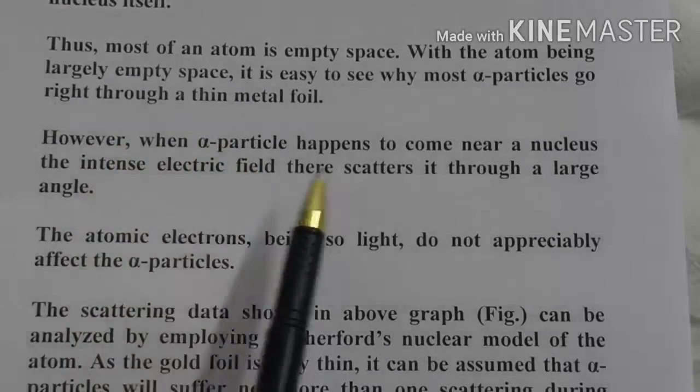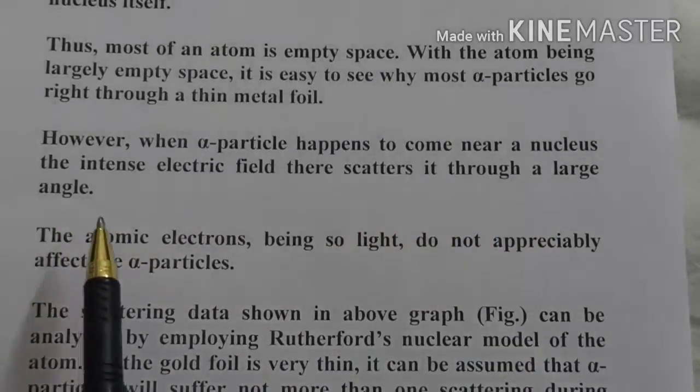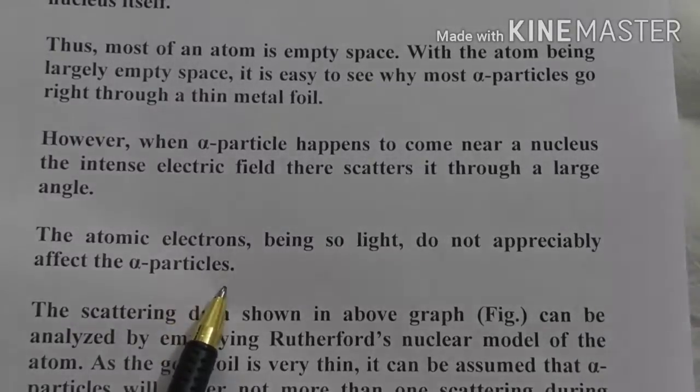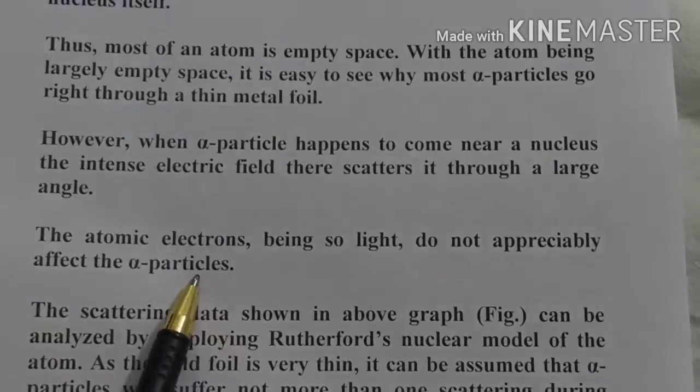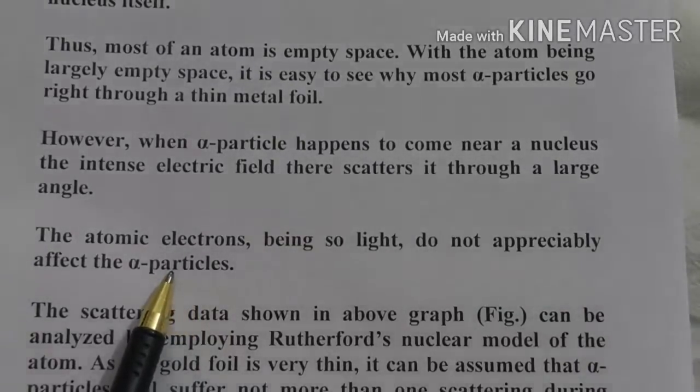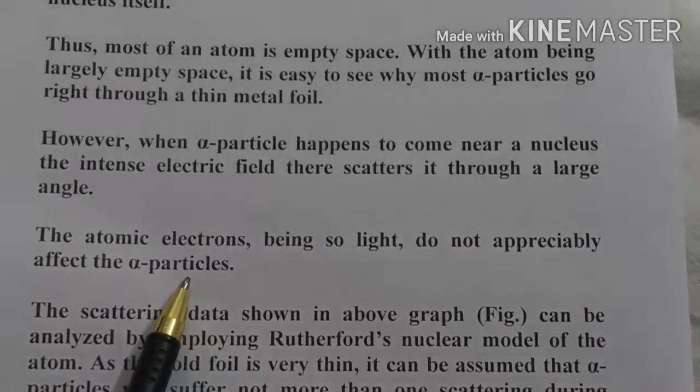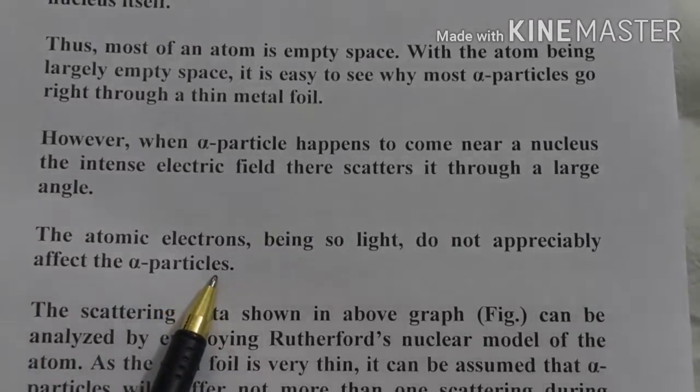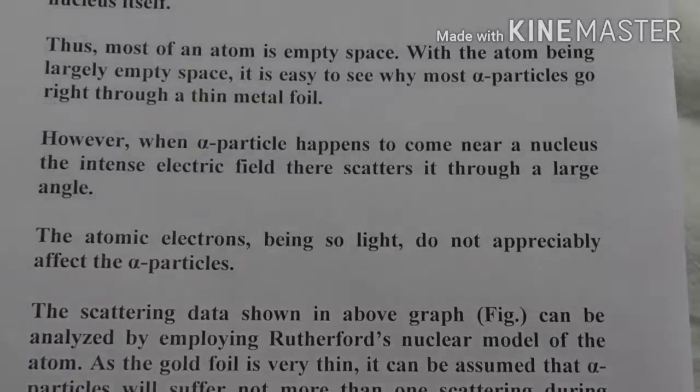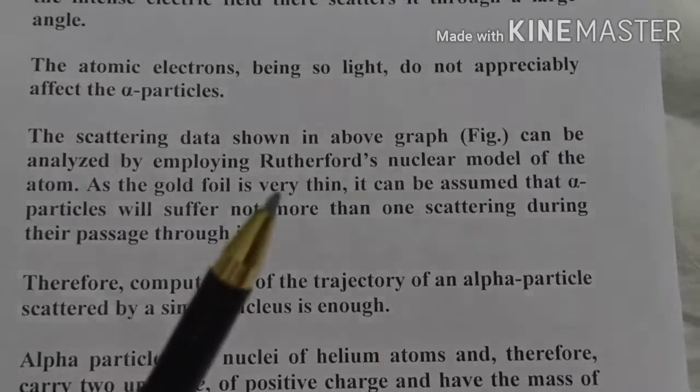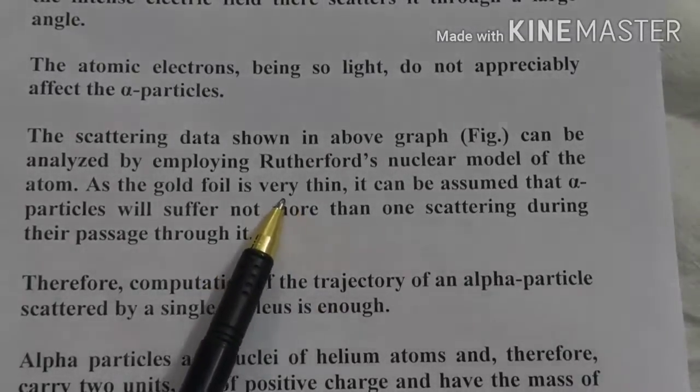Now we have seen this graph. The graph also supports this thing. Our foil is very thin. I have already said that the foil is thin, means there is not a layer of atoms but there is a single layer, and that's why it experiences a single scattering. Otherwise, if the foil is thick, then there is multiple scattering chance. That's why to have a single scattering, we kept a foil of gold as thin as possible.